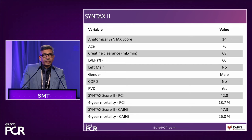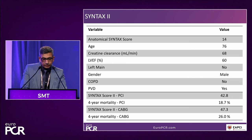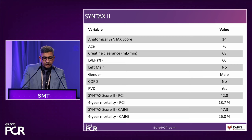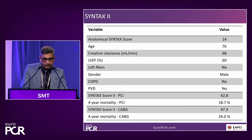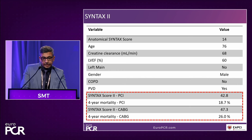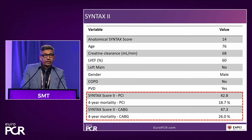To further assess, we calculate the syntax score to decide whether we do PCI, multivessel PCI, or coronary bypass grafting. The anatomical syntax score is 14, which is low. Based on other clinical variables, the Syntax Score 2 for PCI is 42.8, meaning a four-year mortality of 18.7%. For CABG, the Syntax Score 2 is 47.3 with a four-year mortality of 26.0%, favoring PCI. So low syntax score and Syntax Score 2 both favor PCI for this patient.